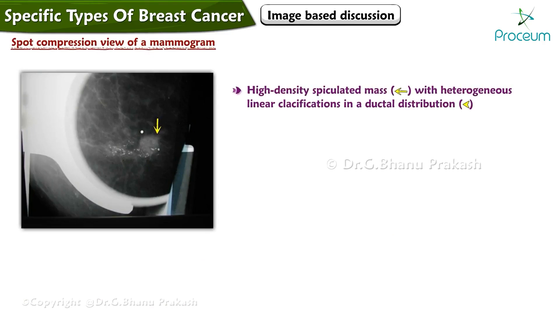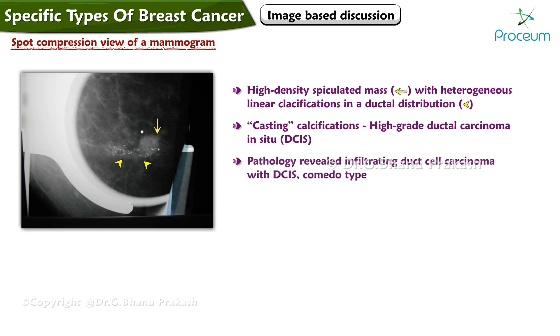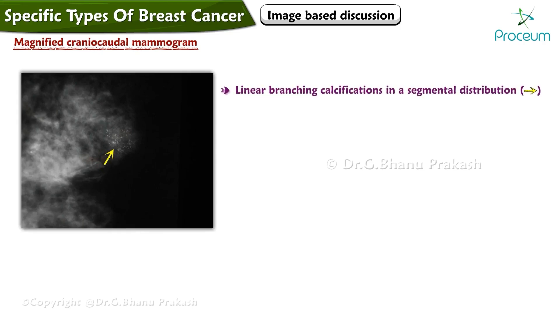Here is a spot compression mammogram view showing a high-density spiculated mass with heterogeneous linear calcifications in a ductal distribution. These casting calcifications are characteristic of high-grade ductal carcinoma in situ. Pathology revealed infiltrating duct cell carcinoma with ductal carcinoma in situ, comedotype.